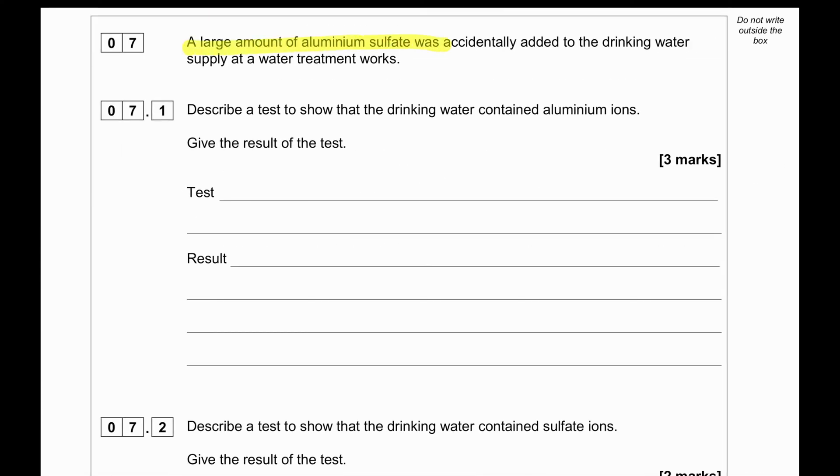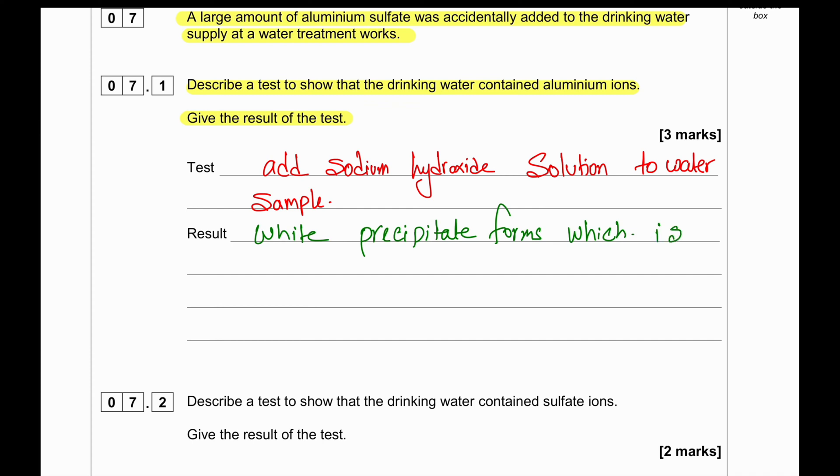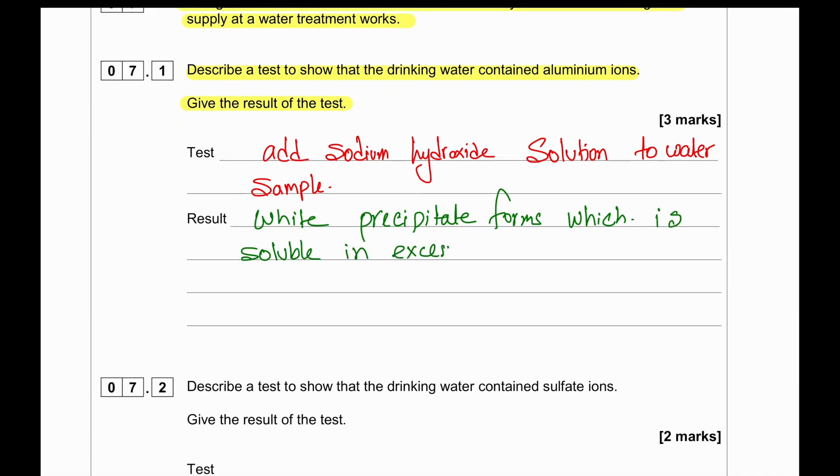A large amount of aluminum sulfate was accidentally added to the drinking water supply at a water treatment works. Describe a test to show the drinking water contained aluminum ions and give the result. To test for aluminum ions, add sodium hydroxide to the solution of water. If there is aluminum present, you will get a white precipitate that is soluble in excess sodium hydroxide, indicating aluminum ions.